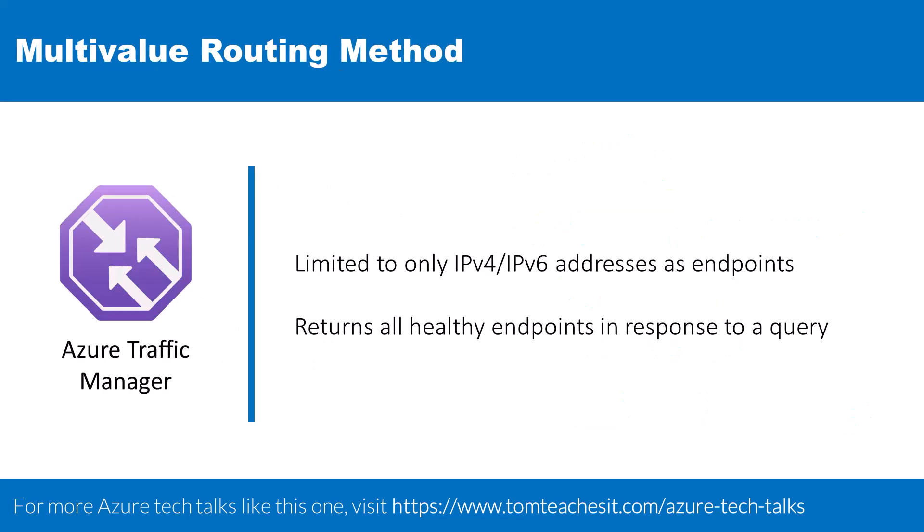For Traffic Manager profiles that are limited to having only IPv4 or IPv6 addresses as endpoints, we have the multi-value routing method. In response to a query, this method returns all healthy endpoints, ensuring robustness and reliability in network management.